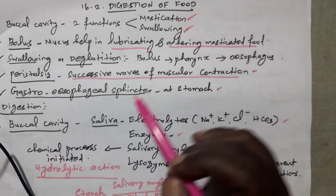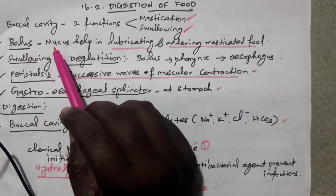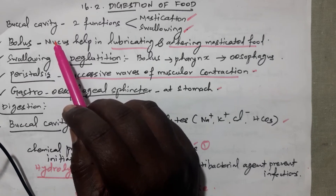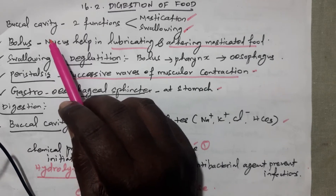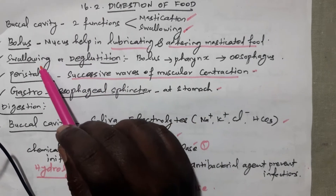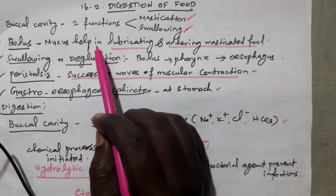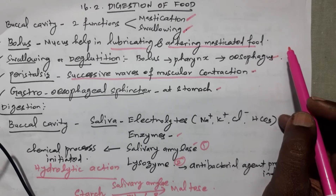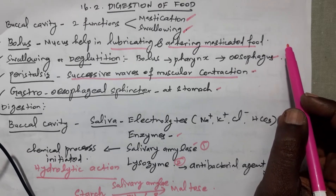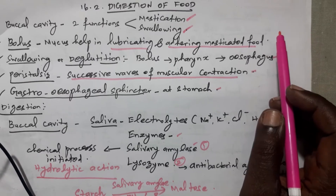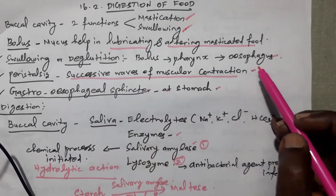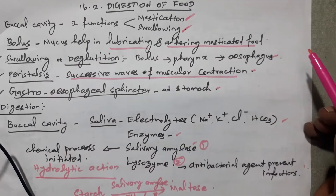Another three terms are given. One is bolus — bolus means the mucus secreted by the saliva, which is helpful for lubrication of the food material and adhering of the masticated food. Adhering means everything is attached and makes a round-like structure called a bolus. Next is swallowing or deglutition: after forming a bolus, it is moved into the pharynx and then into the esophagus. Peristalsis is another activity — the bolus is moved through the esophagus by successive waves of muscular contraction, which is called peristalsis.